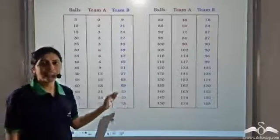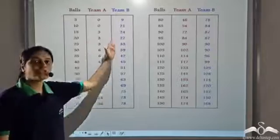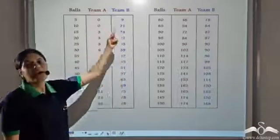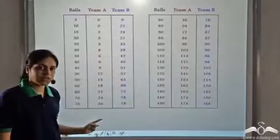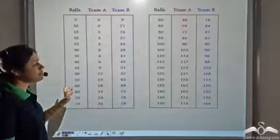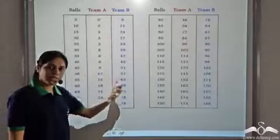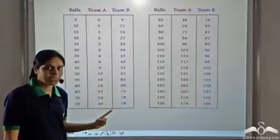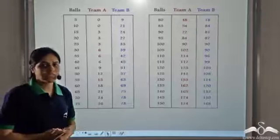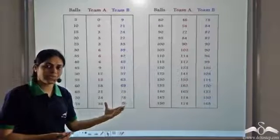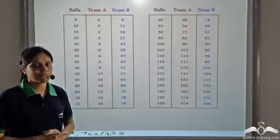Look at these tables. These tables show the runs scored by two teams, team A and team B, over the course of a cricket match — that is, in different balls, what are the runs scored by team A and what are the runs scored by team B. Now your task is to analyse these tables and tell me what you infer from them.